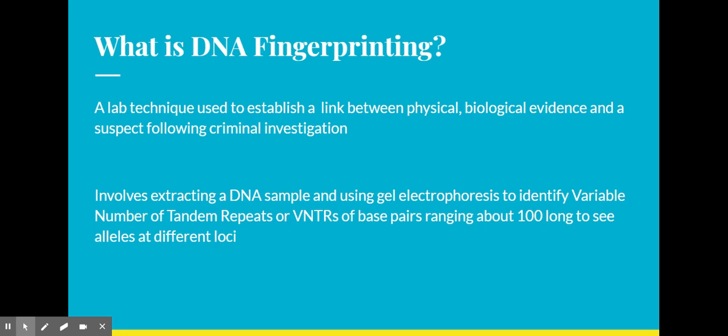So, how are we going to do that? There was a sample of DNA left at the crime scene, and through DNA fingerprinting, we can establish a link between this evidence and the criminal. We're going to do that by extracting the DNA from the sample and loading it into a gel for gel electrophoresis to identify where the VNTRs are — the locations on the loci in which there are about 100 base pair repetitions with varying length for varying loci.